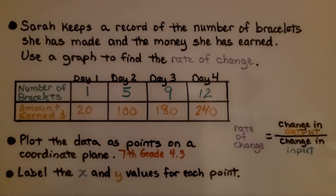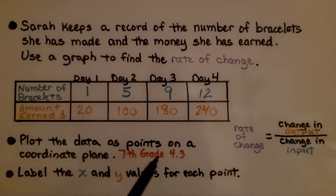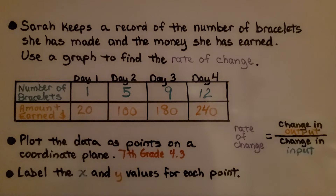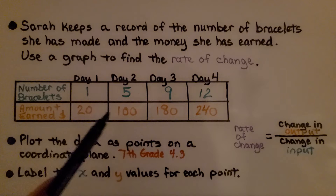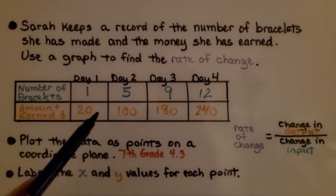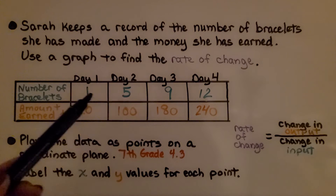We plot the data as points on a coordinate plane. We learned in 7th grade math, lesson 4.3, about ordered pairs and plotting points for a proportional relationship. We labeled the x and y values for each point. Remember, our rate of change is going to be the change in the output (orange) to the change in the input (green).